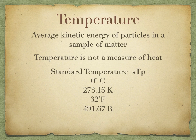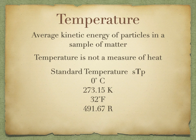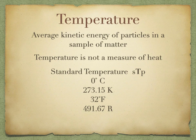Standard temperature is zero degrees Celsius, which equals 273.15 Kelvin. The conversion from Celsius to Kelvin is: K = °C + 273.15. Zero degrees Celsius also equals 32 degrees Fahrenheit. There's also Rankine — the absolute temperature scale paired with Fahrenheit, where zero Rankine and zero Kelvin are the same coldest possible temperature. Because Fahrenheit degrees represent smaller temperature increments than Celsius, the Rankine value of standard temperature is 491.67 R. We'll primarily work in Celsius and Kelvin.